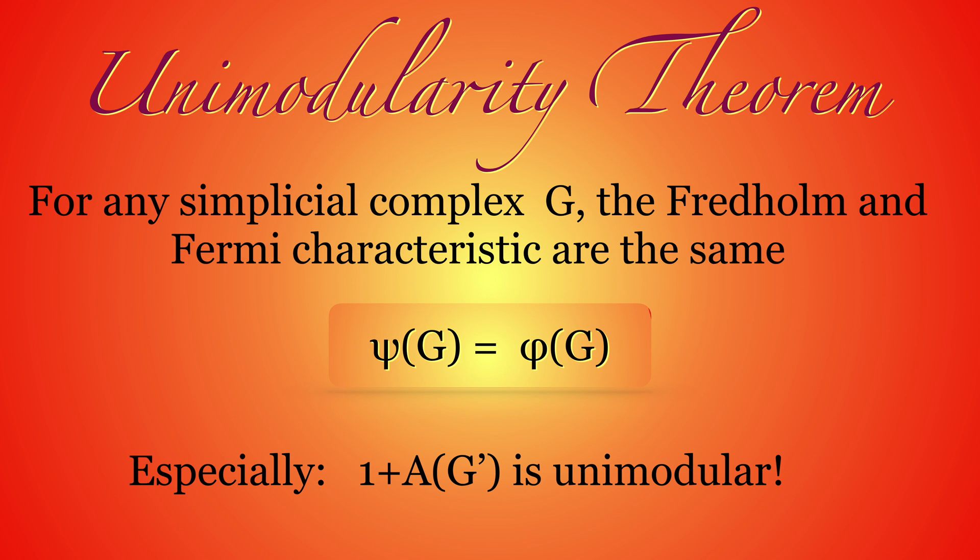Here is the main result. The unimodularity theorem tells that for any complex G, the Fredholm characteristic and the Fermi characteristic agree. It holds not only for abstract simplicial complexes but also for CW complexes. The consequence is that the Fredholm matrix is unimodular if A is the adjacency matrix of the connection graph. The matrix belongs to GL_n(Z) and the inverse is an integer matrix again.